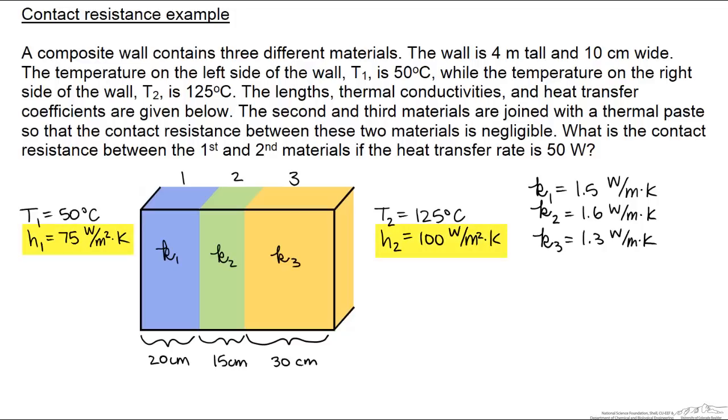We have our convective heat transfer coefficients, and we have the lengths of the wall with their thermal conductivity. However, there is a contact resistance between material 1 and 2, so right here. And we want to know what is the maximum that contact resistance can be in order to have a heat transfer rate of 50 watts.